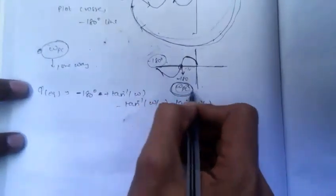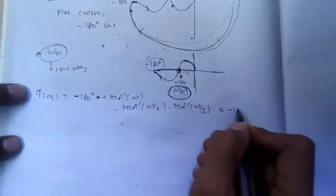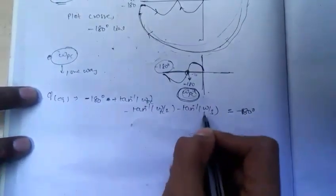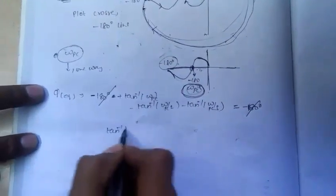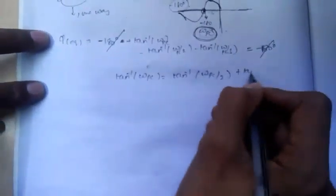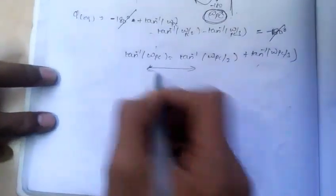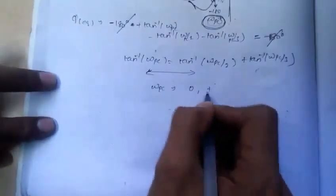When the curve has the Omega PC value, it is crossing minus 180. So if you equate this phase to minus 180, the frequency changes to Omega PC. Solving this will give you Omega PC: tan inverse Omega PC by 2 plus tan inverse Omega PC by 3. And if you do the trigonometric calculation, you get Omega PC values as 0, plus or minus 1.